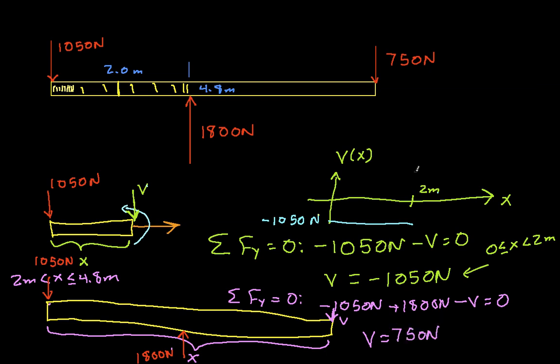So for a value of x between 2 meters and 4.8 meters, this would be out here at 4.8 meters, I have a value of 750 newtons. And so again, the concept here is that I have conceptually at least,